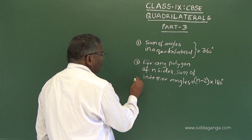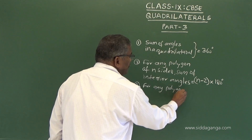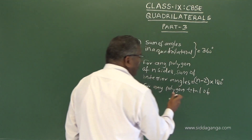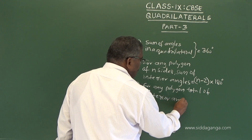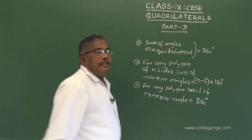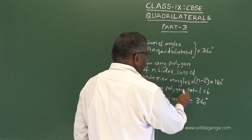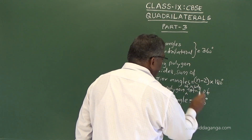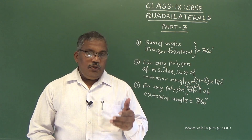Thirdly, for any polygon, the total of exterior angles is equal to 360 degrees. This is fixed — whether it is a triangle, quadrilateral, or pentagon, for any polygon of n sides, the exterior angle total will be 360 degrees. These things we have learned and now, to consolidate this knowledge, let us take up a few problems on this concept.